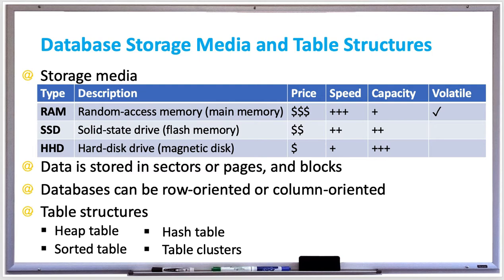Hash tables are tables where rows are assigned to buckets, and buckets are blocks that contain the rows. Each bucket starts with one block, and as the table grows, buckets fill up with rows and new blocks are allocated or linked to the initial block, creating a chain of linked blocks. The bucket containing each row is identified by the hash function, and a hash key is typically the primary key or another column, or even a group of columns. The hash function uses the hash key to compute which bucket contains the row.